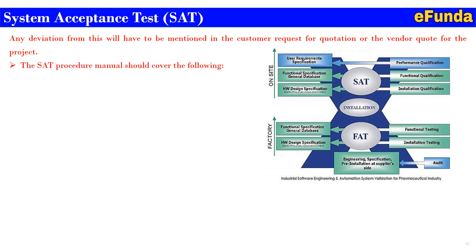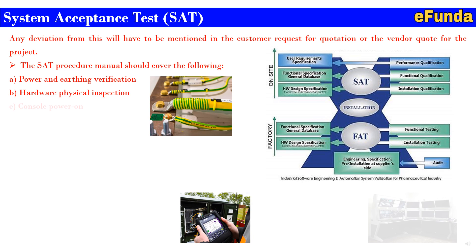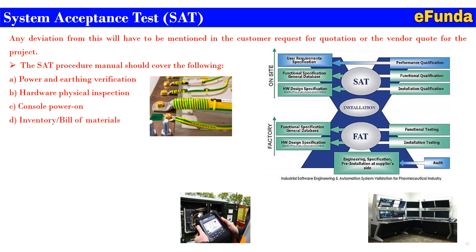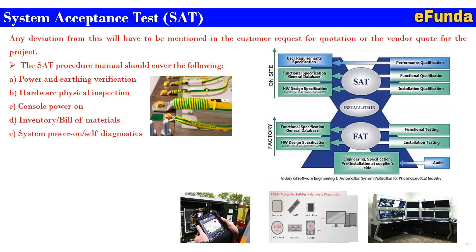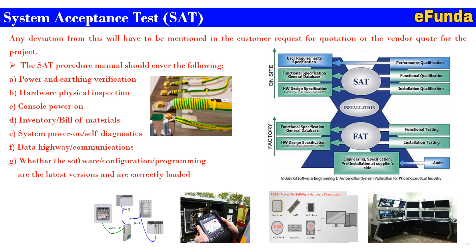The SAT procedure manual should cover the following: A — Power and Earthing Verification; B — Hardware Physical Inspection; C — Console Power On; D — Inventory Bill of Material; E — System Power On; F — Self-Diagnostic; G — Data Highway for Communications; H — whether the Software Configuration, Programming, or Latest Versions are correctly loaded; and the last item is subsystem interface devices. This is how the complete interface of the system is checked at the site after installation, with operator or actual equipment connected in line.